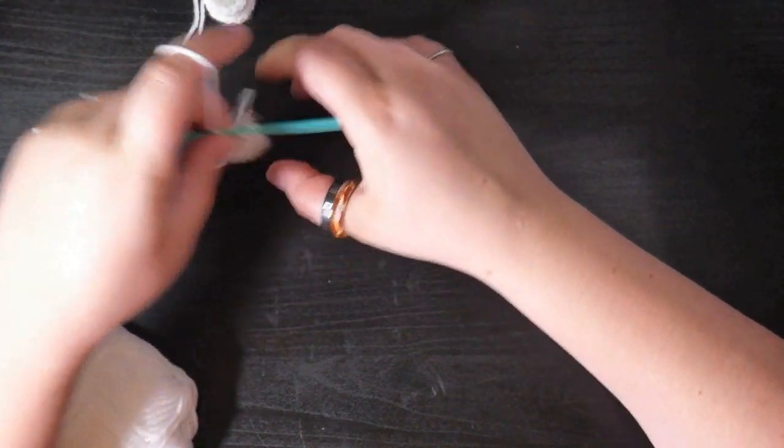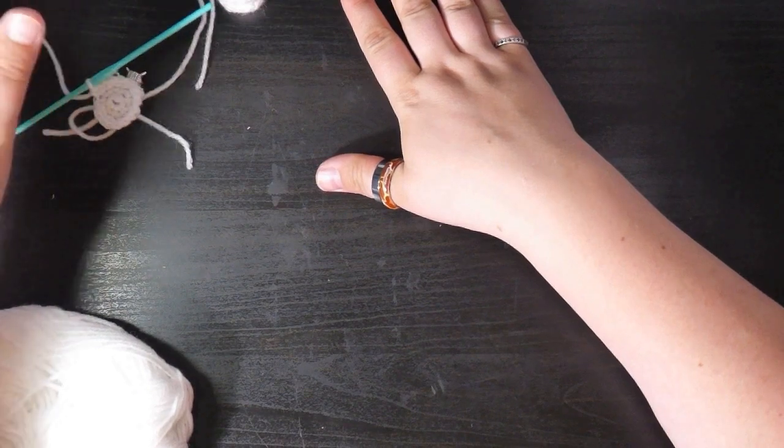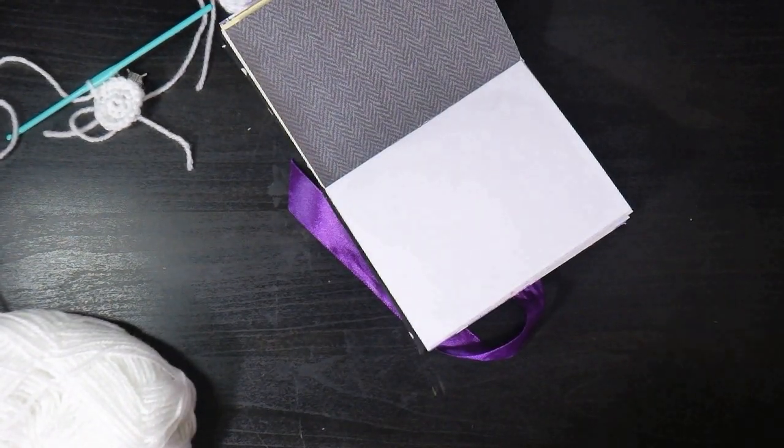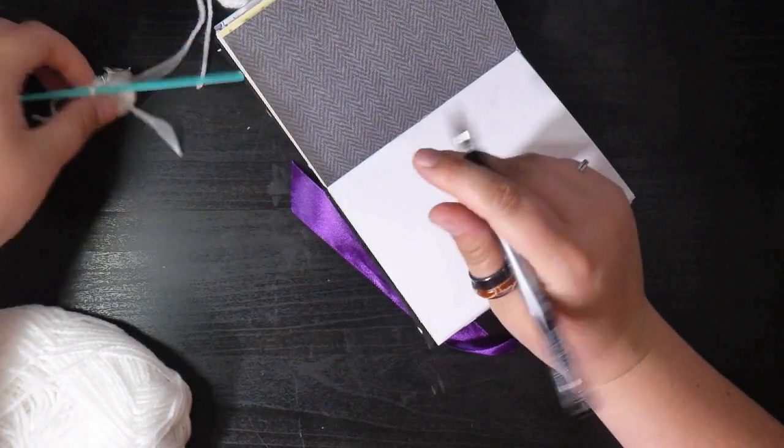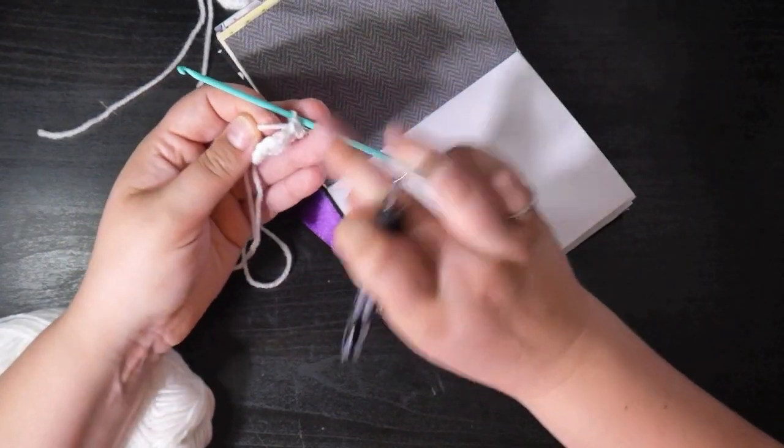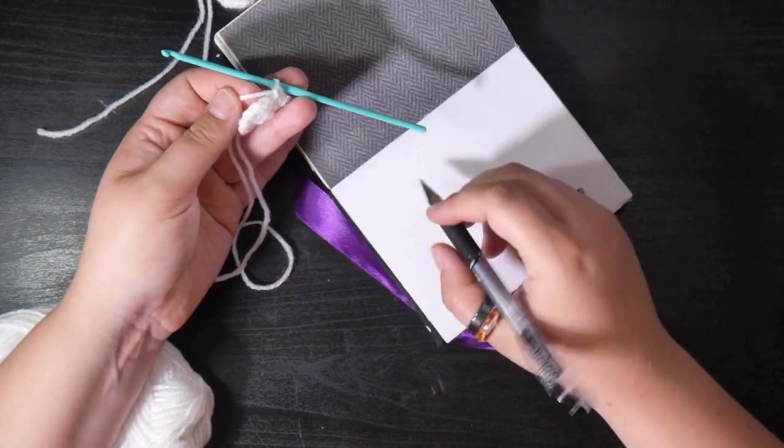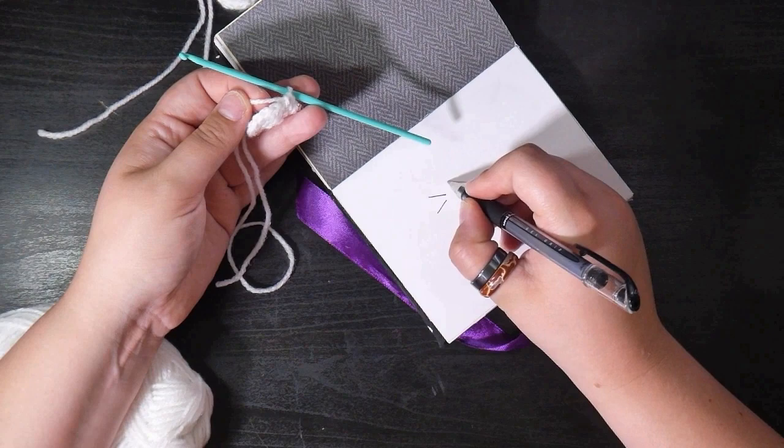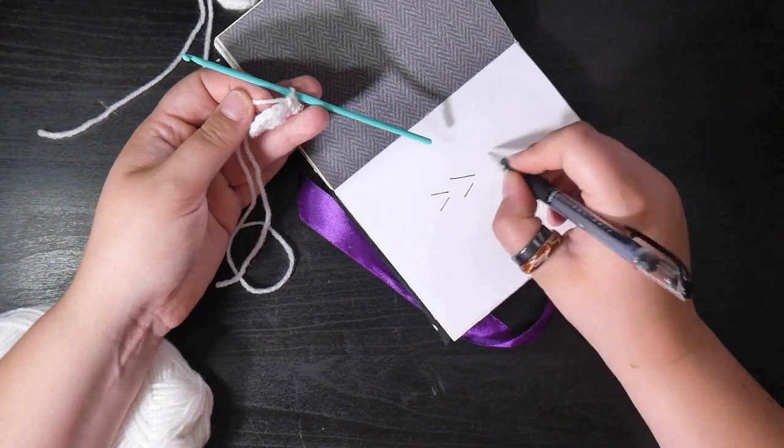So this is a technique that hasn't been used in this pattern yet. They want us to crochet into the back loops only. Now this is a really simple thing to do. So when you have your piece of crochet, you're working into the stitches around the edge. And you'll see along the top you've got these little V shapes.